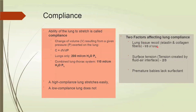In summary, the forces that tend to collapse or contract the lung are distributed as follows: one-third comes from the elastic recoil of the lung tissue, and two-thirds comes from the surface tension forces at the alveolar air-fluid interface. So when you distend the lung, you are working against both the surface tension and the recoil forces.